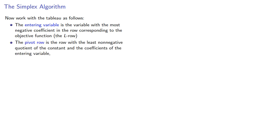The pivot row is the row with the least non-negative quotient of the constant and the coefficients of the entering variable. The exiting variable is the basic variable in the pivot row.